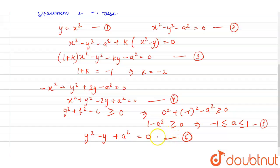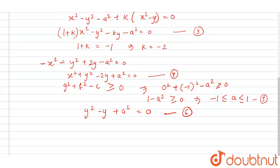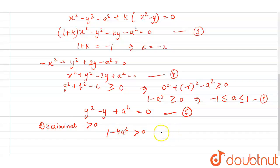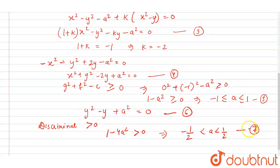For the parabola and hyperbola to intersect in more than two distinct points so that a unique circle may be drawn through them, y must be real and distinct, so the discriminant must be greater than 0. The discriminant gives 1 minus 4a squared greater than 0, and from here we get that a lies between minus 1/2 and 1/2 — call this equation 7.